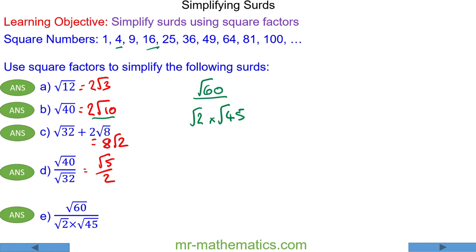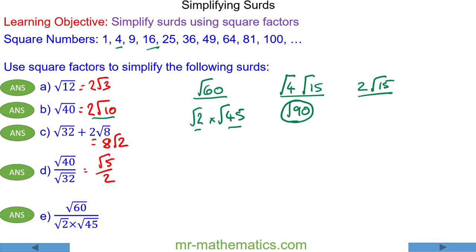For the final question, the square root of 60 can be written as √4 × √15, because 4 is a square factor. We can also write √2 × √45 as √90. The square root of 4 is 2, so we get 2√15. We can write √90 as a multiple of √15 — that would be √6 × √15. The √15 terms cancel, leaving us with 2 over √6.